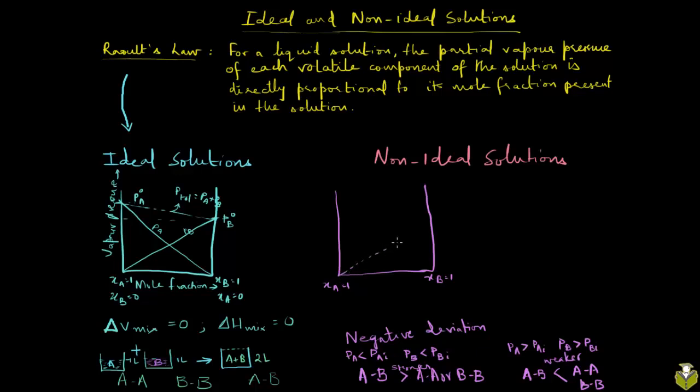This is the dotted line that represents the ideal scenario, Raoult's law. This is PB0. Remember, PB0 is a constant. This is not going to change whether the solution is ideal or not because this is when your XB is equal to 1, when there is no other component in the solution, there is only one component.